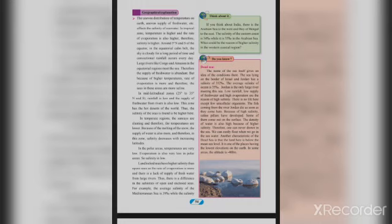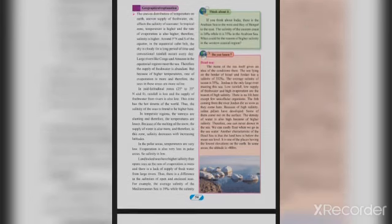Landlocked seas have higher salinity than open seas, as the rate of evaporation is more and there is a lack of supply of fresh water from large rivers. For example, the average salinity of the Mediterranean Sea is 39‰, while the salinity of the most saline ocean — the Atlantic Ocean — is 35‰.